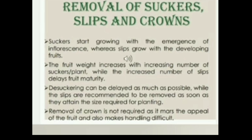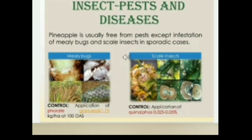Removal of suckers, slips and crowns: Suckers start growing with the emergence of inflorescence, whereas slips grow with the developing fruits. The fruit weight increases with an increased number of suckers per plant, while an increased number of slips delays fruit maturity. De-suckering can be delayed as much as possible, while slips are recommended to be removed as soon as they attain the size required for planting. Removal of the crown is not required, as it marks the peel of the fruit and also makes handling difficult.